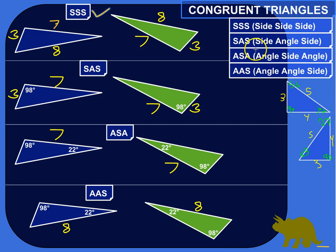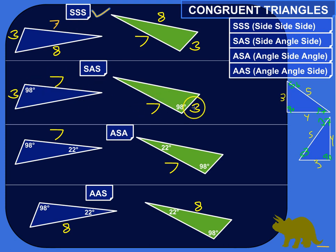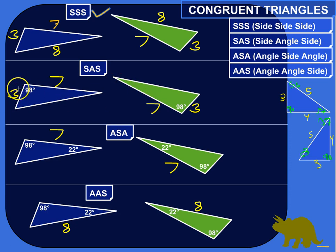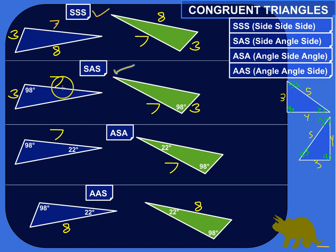Another test is Side-Angle-Side, which means if I'm only given two sides for the triangles and I know the angle in between those two sides — if the two sides are congruent and the angles between them are congruent, that's all I need to know that these two triangles are congruent. So here I've got a side length of three and a side length of seven, and between these two sides I've got an angle of 98 degrees. Over here I've also got a side length of three, a side length of seven, and in between them an angle of 98 degrees. So yeah, these two triangles are congruent.